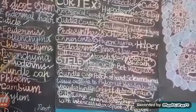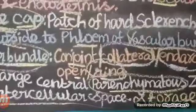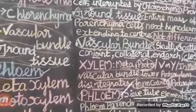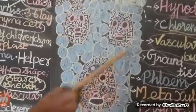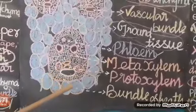In dicot stem, vascular bundles are fewer in number, uniform in size, arranged in a ring, open, and bundle sheath is absent. In monocot, they are numerous, smaller near the periphery, bigger in the center, scattered, closed, and bundle sheath is present. Secondary growth is present in dicot and mostly absent in monocot.